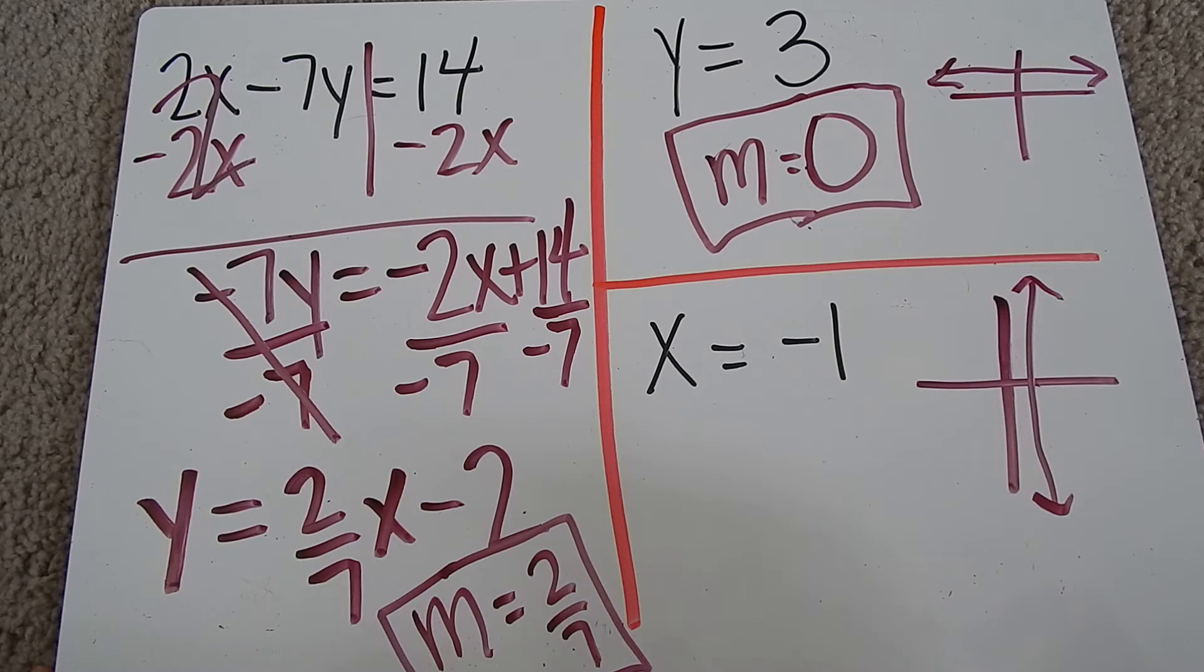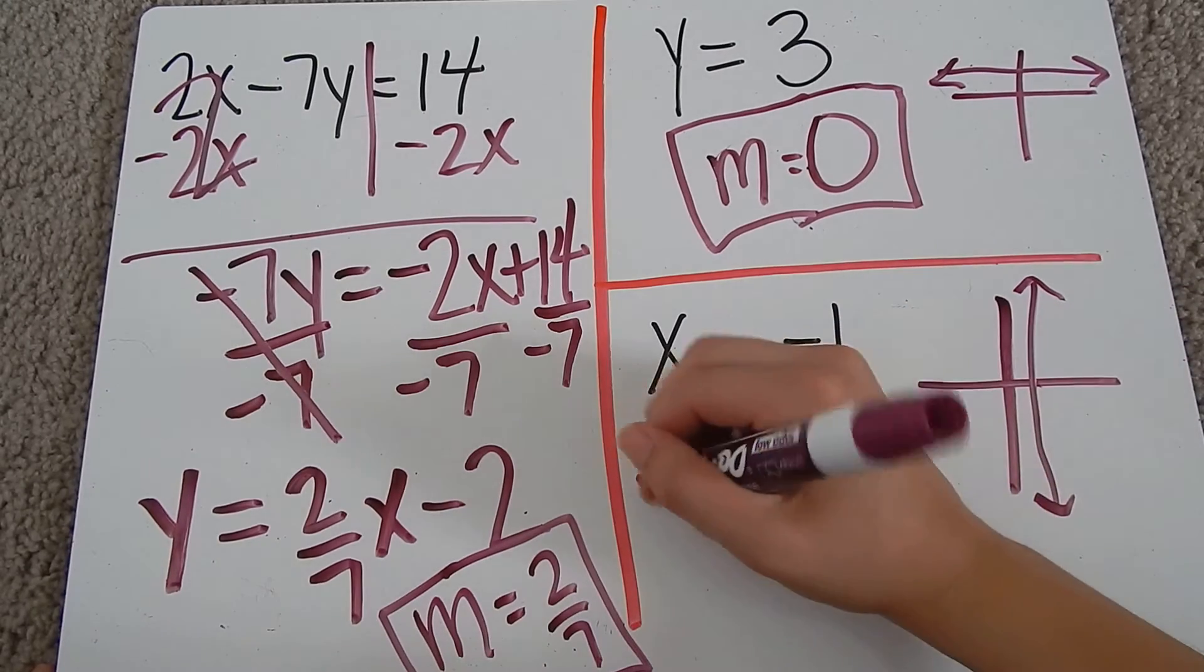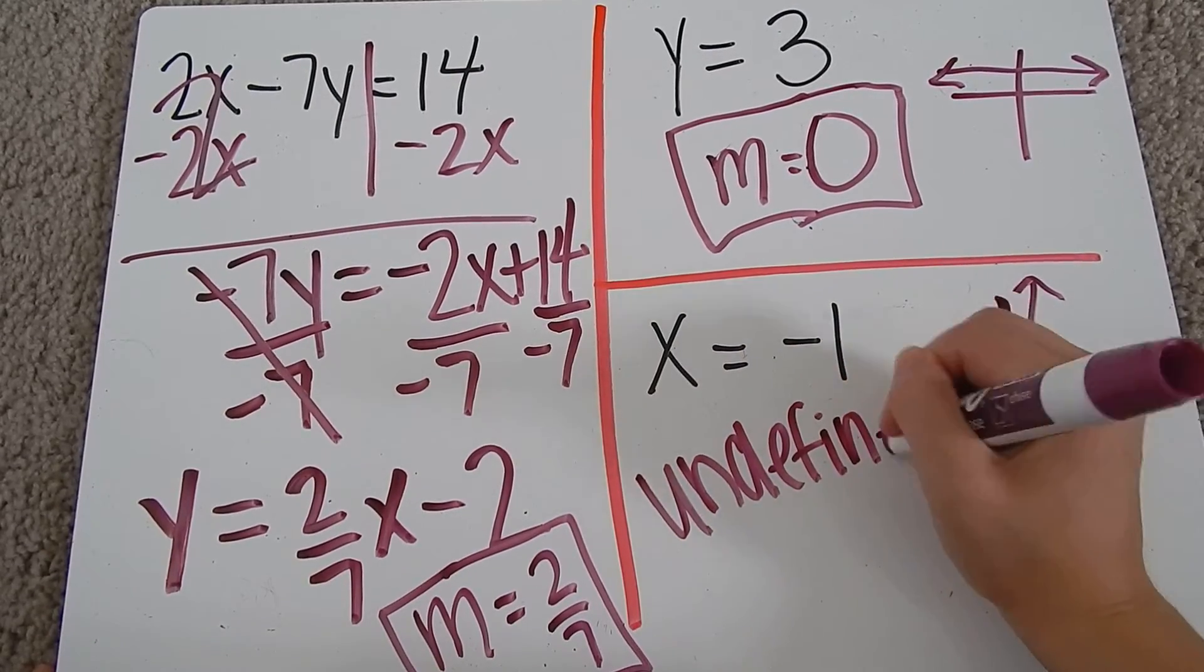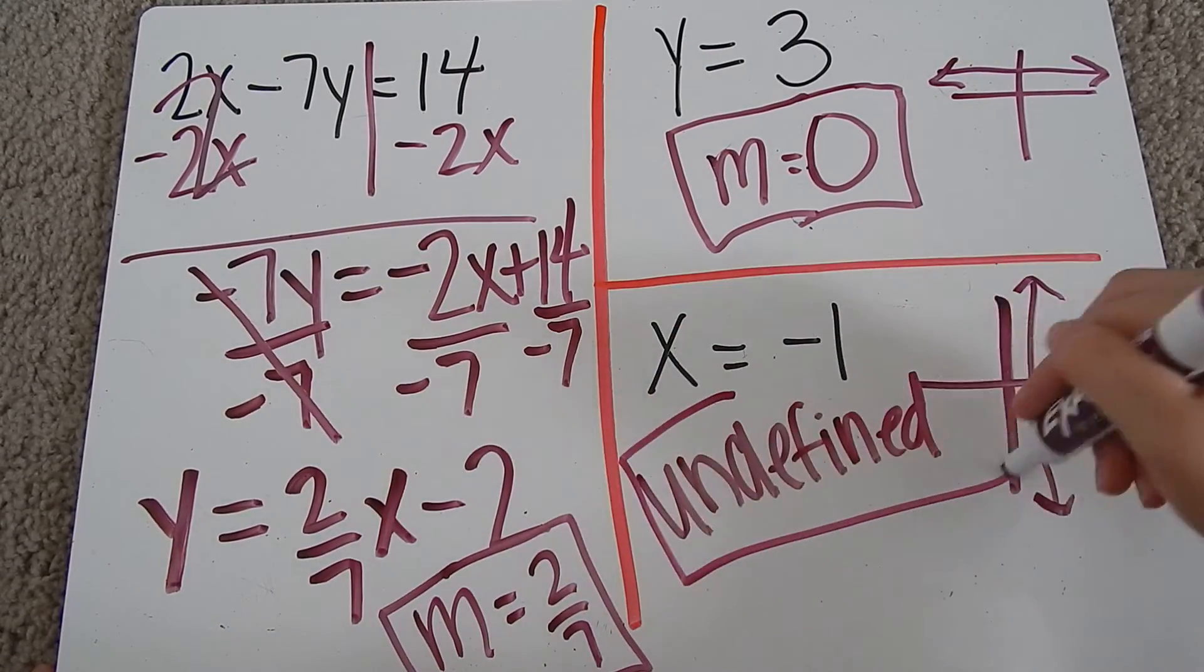A vertical line is undefined. So this one will be undefined. That is my answer there.